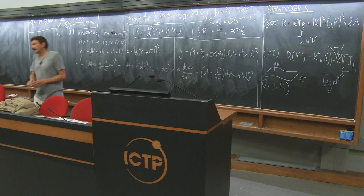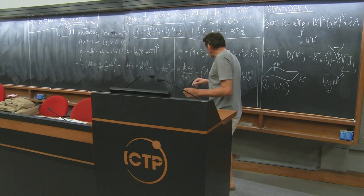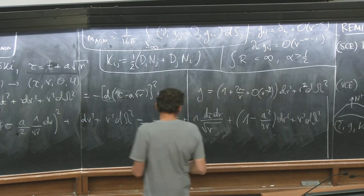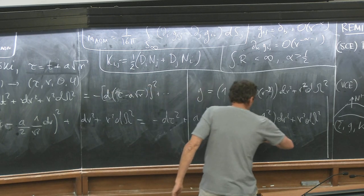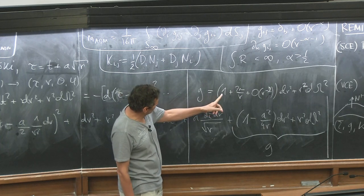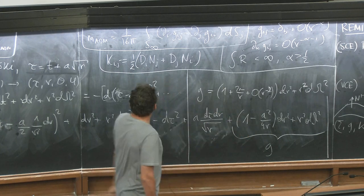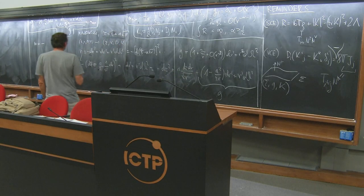This is the Minkowski metric in these coordinates. Nobody forces me to use them — it's a stupid idea — but nothing prevents me. At large distances this goes to the Minkowski metric. If I look at the surface τ = 0, I drop the cross terms, and this is my induced metric. Using the formula: if the metric has a coefficient 1 + (something)/r, that something over r equals 2m. So the mass is −a²/8.